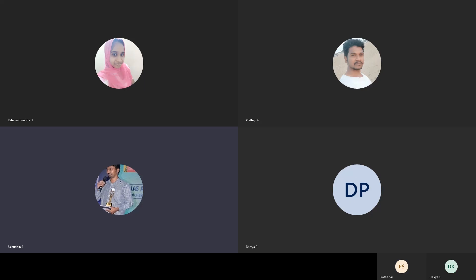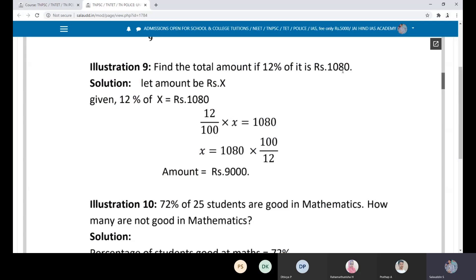Total amount if 12% of it is Rs.1080. How do you get it? Find the total amount.